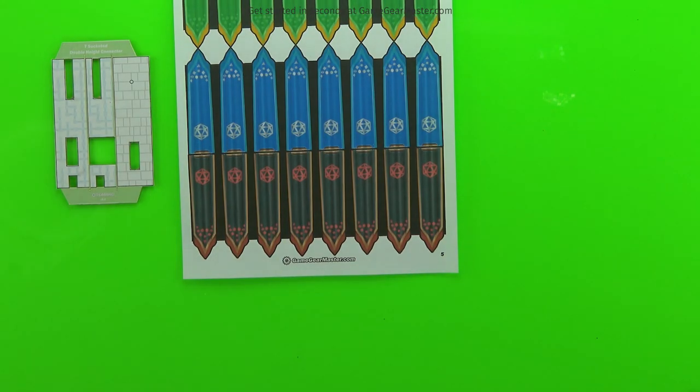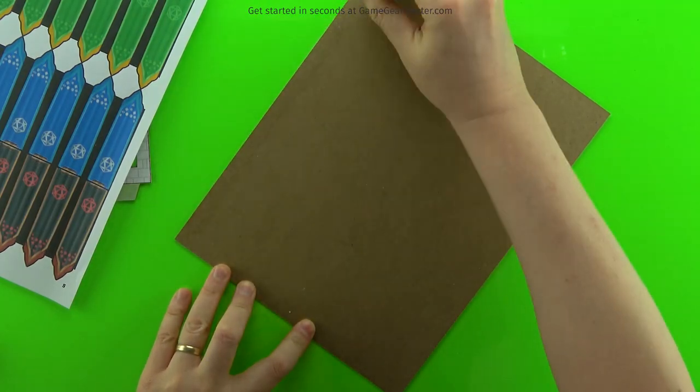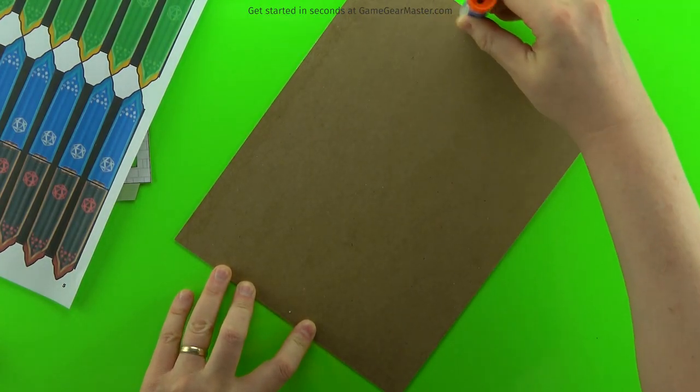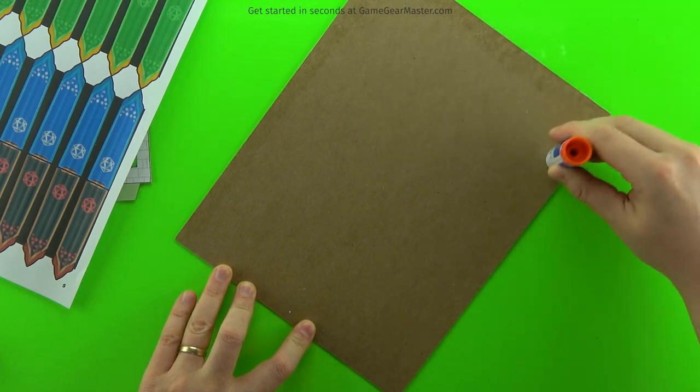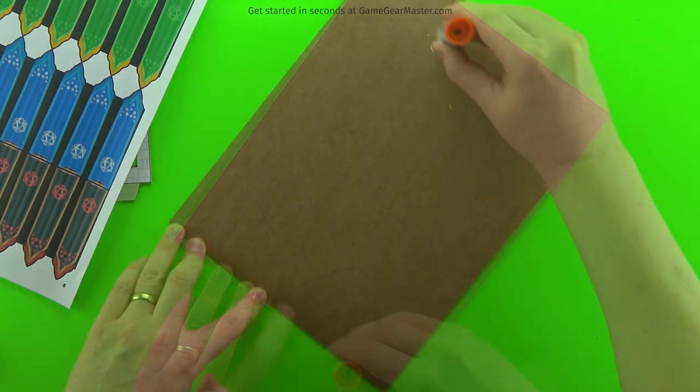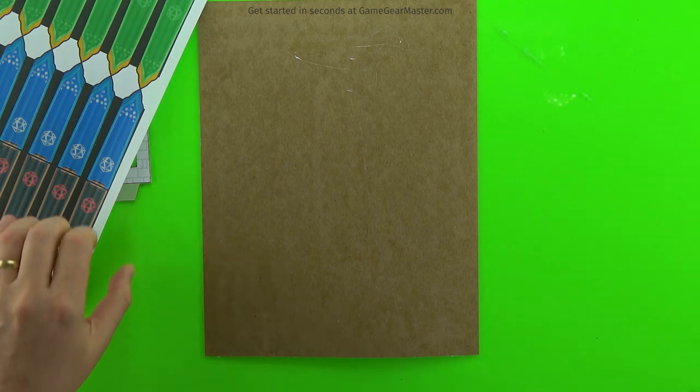So you're going to need at least one printout of the flags from the Terreno tech and torches printable textures file. And here I'm doing the double height banners or flags and just need to glue them onto some cardboard.